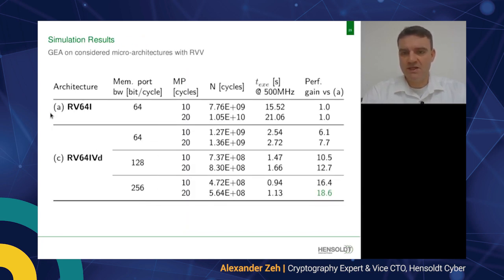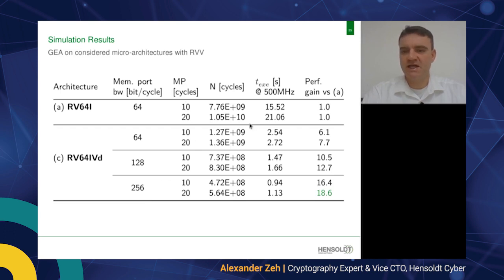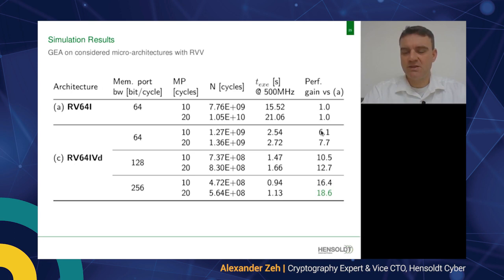The results from ETIS for the Gaussian elimination algorithm assume a memory port bandwidth of 64 bits per cycle and miss penalties of 10 and 20. The number of cycles and time are calculated for a fixed frequency of 500 MHz. In architecture C with different memory port bandwidths and miss penalties, we achieved a performance gain of a factor of 18.6 — very impressive, and it underlines that it is worth investigating the vector extension for this scheme.